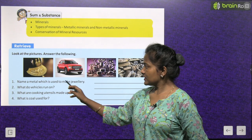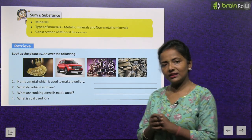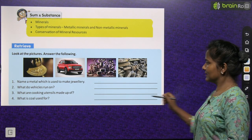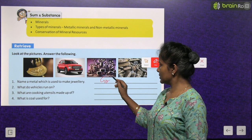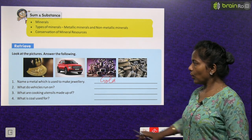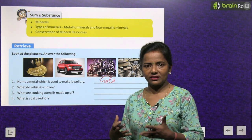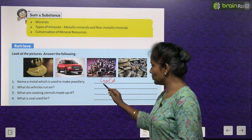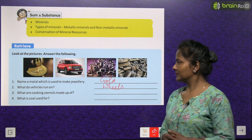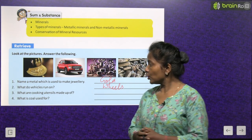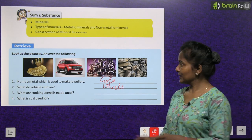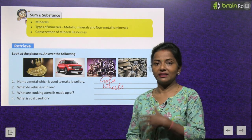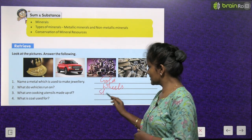Name a metal which is used to make jewellery — jewellery banane ke liye kaon sa metal use kiya jata hai? It's gold. So write down gold here. What do vehicles run on? Vehicles kis par chalti hain? And what are cooking utensils made of? They are mainly made of steel.